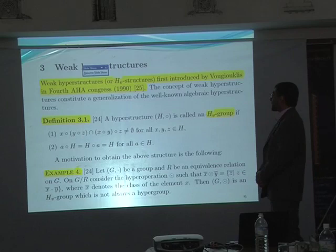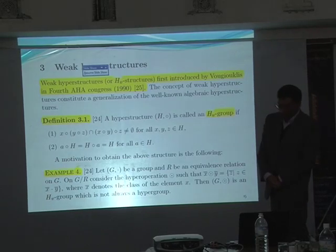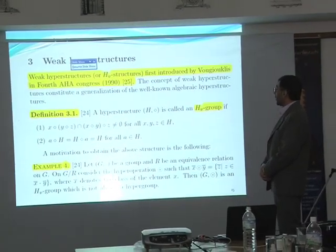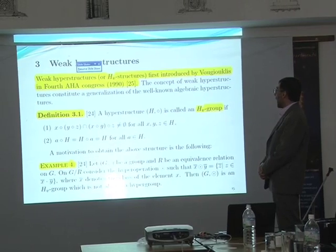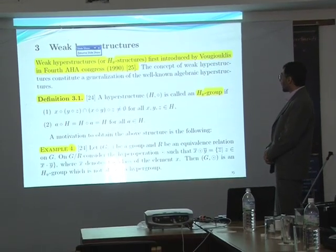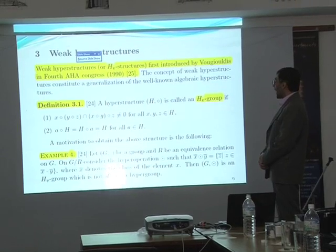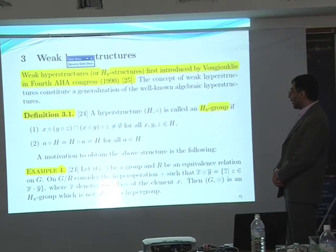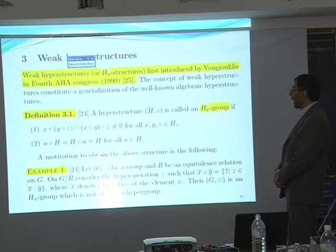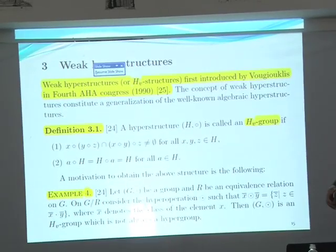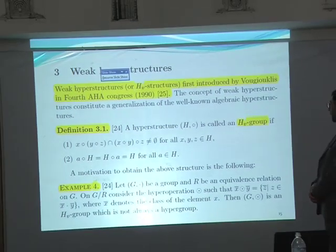Weak hyperstructures began about 20 years ago, as a generalization of the group. In this structure, instead of the associative law, we have weak associativity. So the intersection must be non-empty.